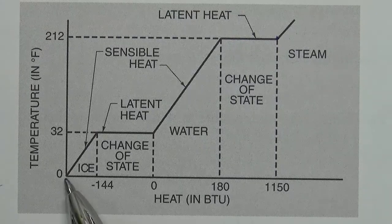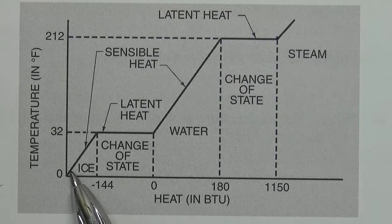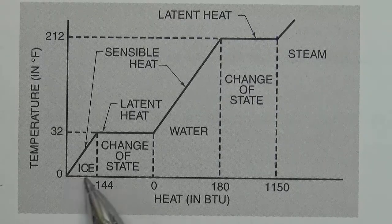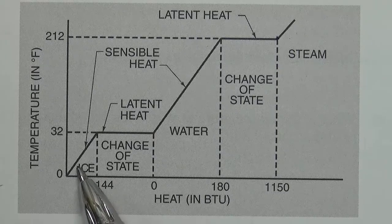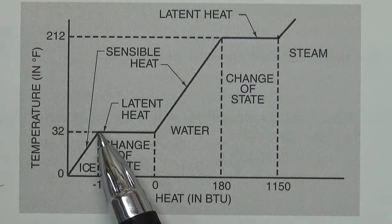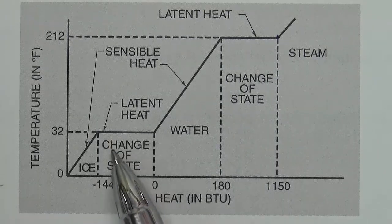So if we just start at zero degrees Fahrenheit and we start adding heat BTU to the ice, and we have one pound of ice to begin with, the temperature just increases up to 32 degrees Fahrenheit.